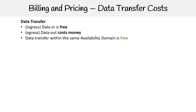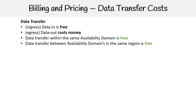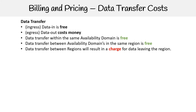Data transfer within the same availability domain is going to be free. Data transfer between availability domains in the same region is also going to be free. Data transfer between regions will result in a charge for data leaving the region.